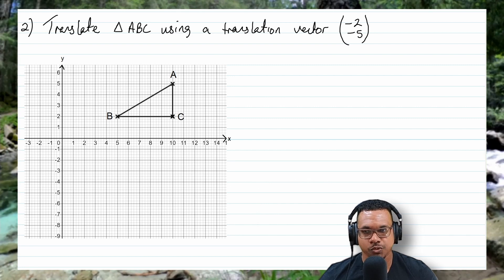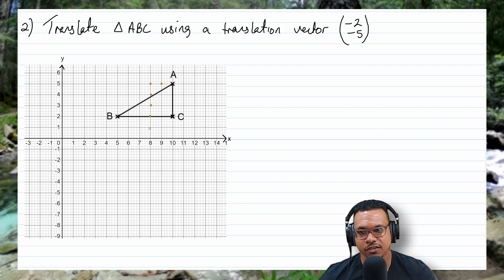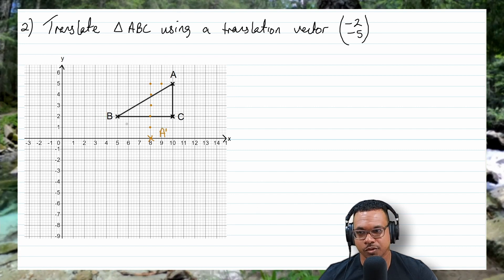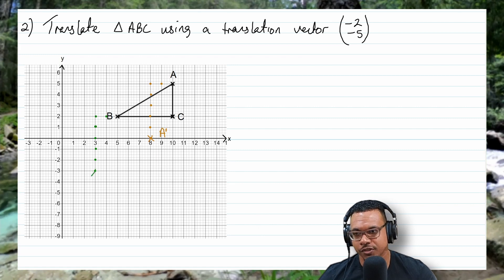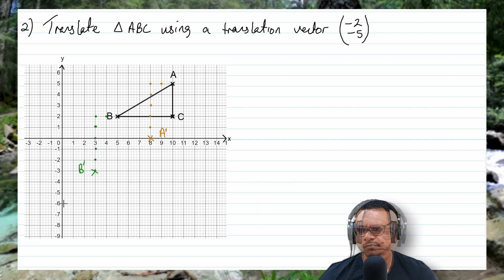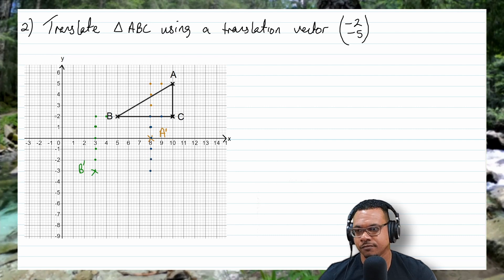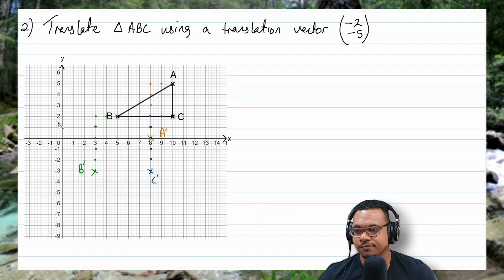Starting with A, going two units to the left and five units downwards gives us A prime. Going to B, two units to the left and five units downwards gives us B prime. And for C, two units to the left and five units downwards gives us C prime. We connect these three points with a ruler — this is the object and this is the image.